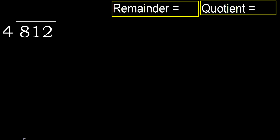812 divided by 4. 8 is not less, therefore work with 8. 4 multiplied by which number is nearest to 8 but not greater? 4 multiplied by 3 is 12, which is greater. Multiply by 2 is 8, which is not greater. Subtract: 8 minus 8 equals 0.